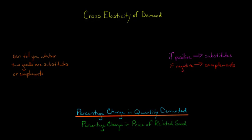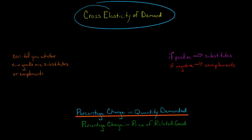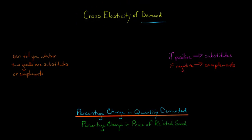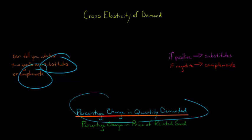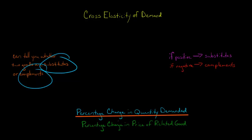In this video we're going to talk about cross elasticity of demand. Cross elasticity of demand tells you what happens to demand for one good when there's a change in the price of another good. You calculate it by taking the percentage change in quantity demanded of one good and dividing it by the percentage change in price of the other good.